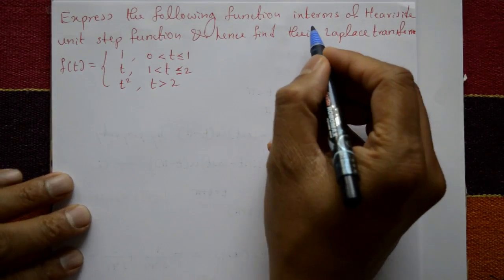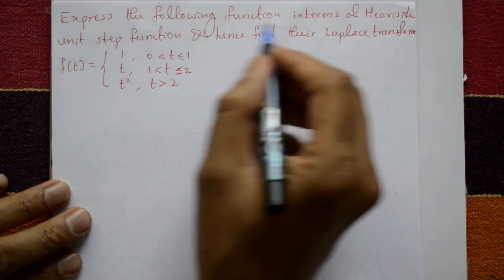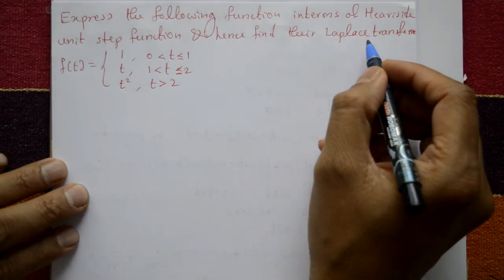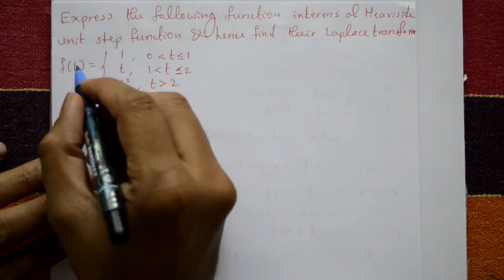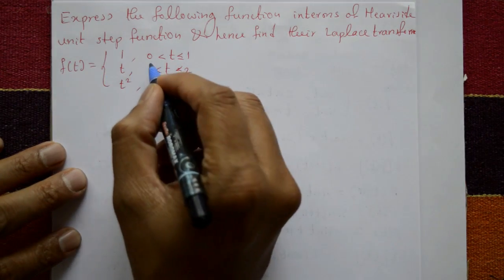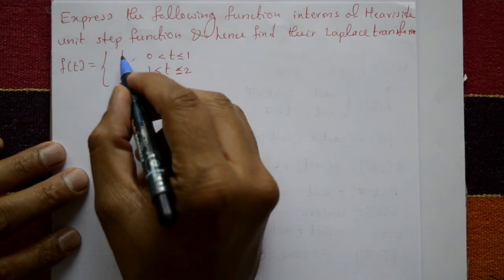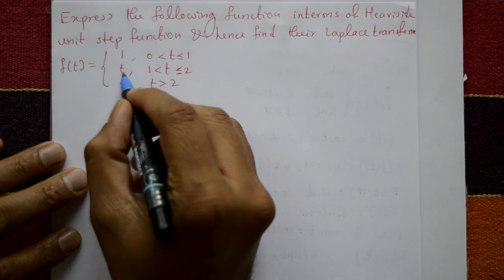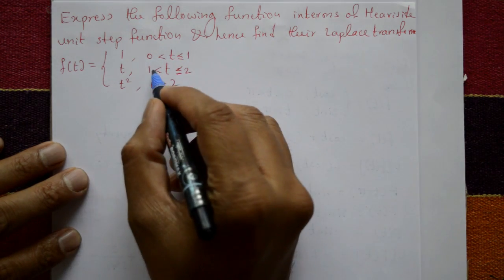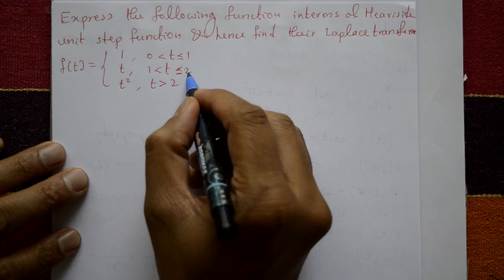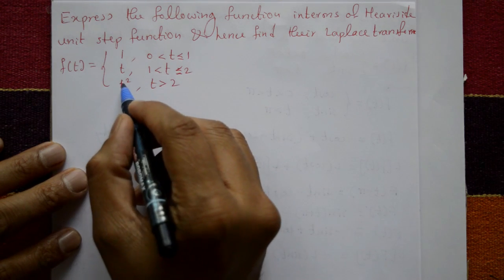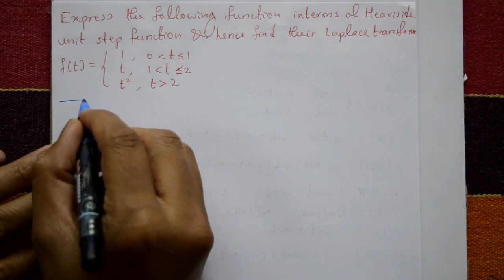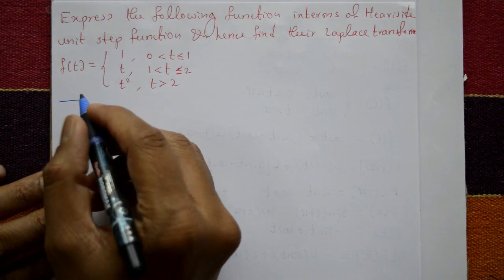Express the following function in terms of the Heaviside unit step function and hence find its Laplace transform. f(t) is given as the discontinuous function: 1 for 0 < t ≤ 1, t for 1 < t ≤ 2, and t² for t > 2.